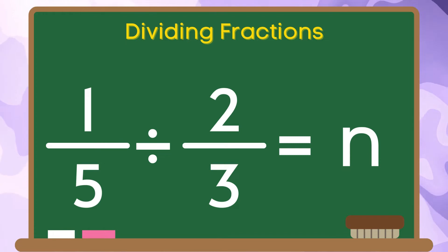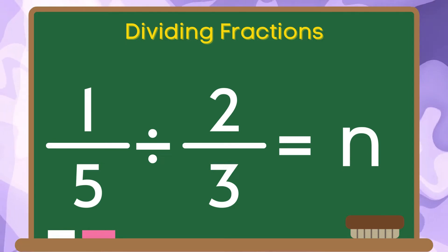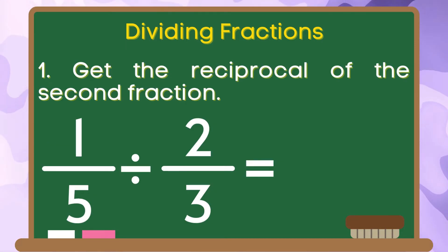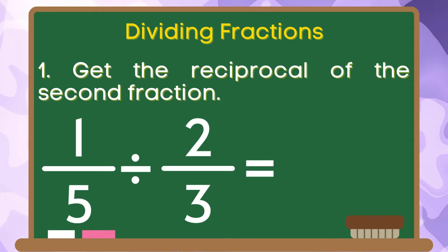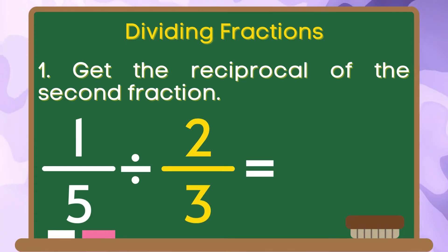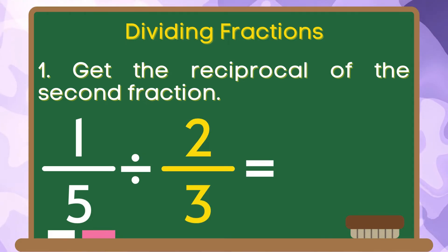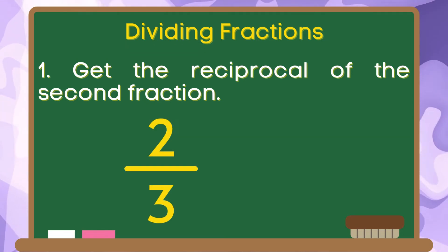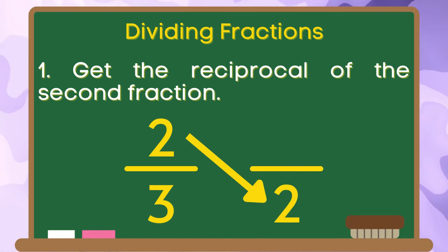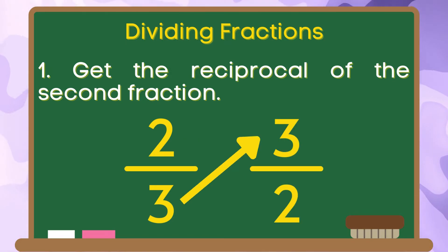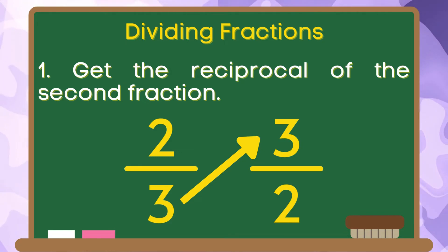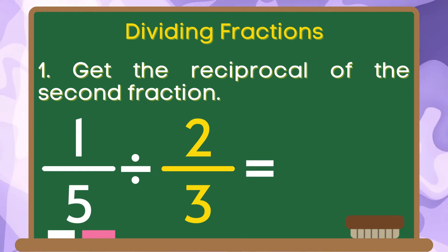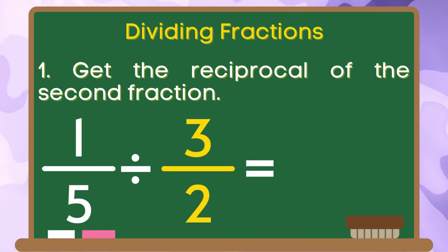And for the last example: 1 fifth divided by 2 thirds is equal to n. Step 1, get the reciprocal of the second fraction. Since 2 thirds is our second fraction, we are going to switch the position of our numerator and denominator. 2 will be our denominator and 3 will be our numerator. Therefore, the reciprocal of 2 thirds is 3 halves.